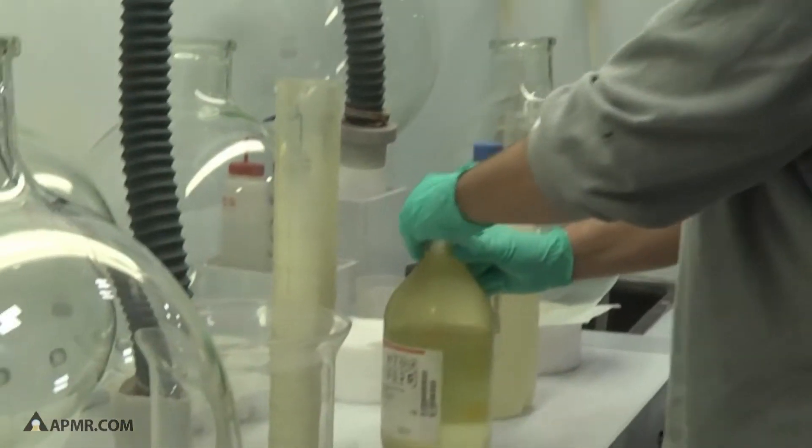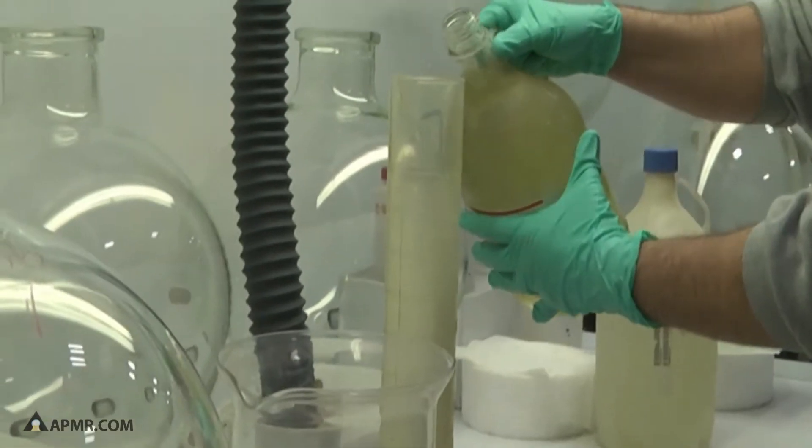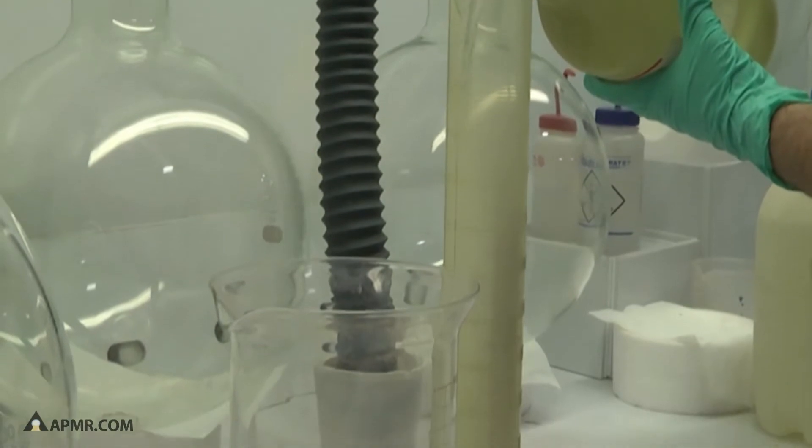This is an example of a digestion of a four metal scrap lot. Now this is only a portion of one of our typical scrap lots. But the first step is mixing our two types of acids together.